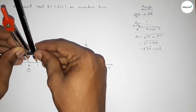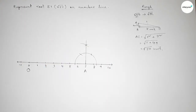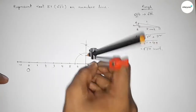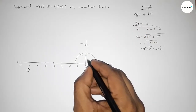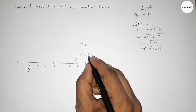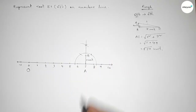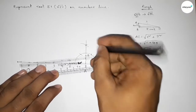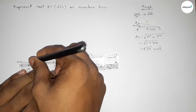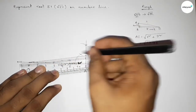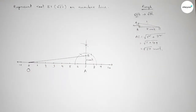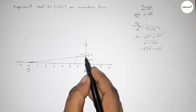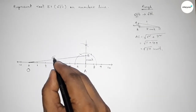Taking AB equal to 1 unit length using the compass, putting the compass here and marking point B — this is 1 unit length. Now joining B and O; the length OB represents root 50 units on the construction.